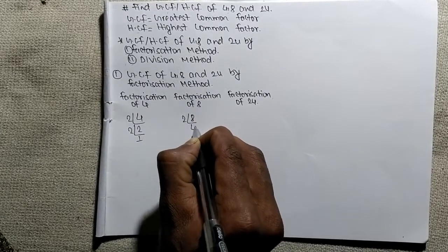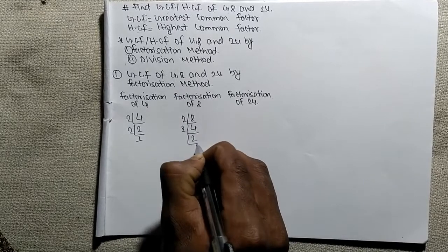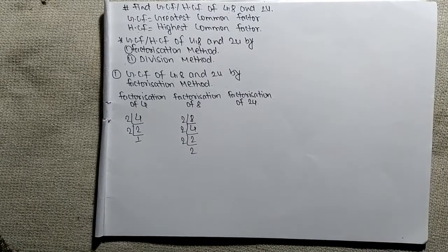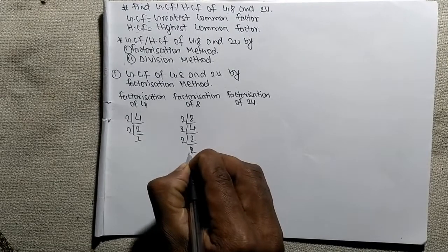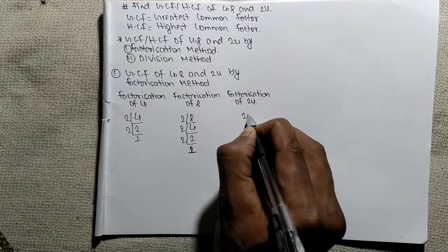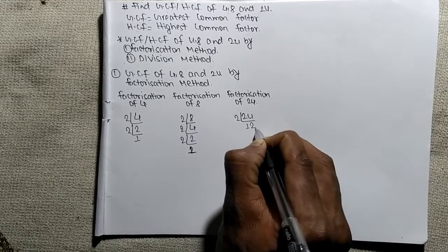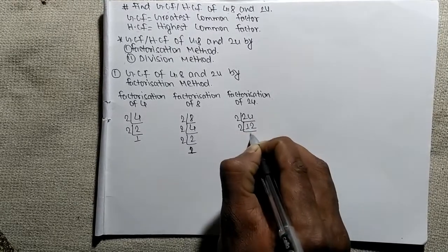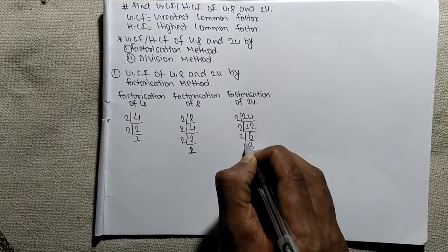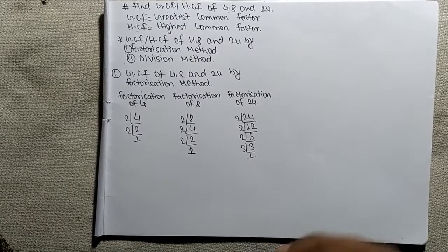In the same way, for 8: 2 times 4 means 8, 2 times 2 means 4, and 2 times 1 means 2. For 24: 2 times 12 means 24, 2 times 6 means 12, 2 times 3 means 6, and 3 times 1 means 3.